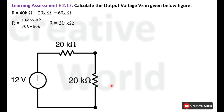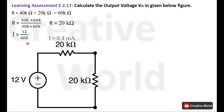With the circuit reduced, we can calculate the total current using Ohm's law. The voltage and total resistance are both known. Total current equals total voltage divided by total resistance: 12 divided by 40 kilo ohm, giving a current of 0.3 milliampere.